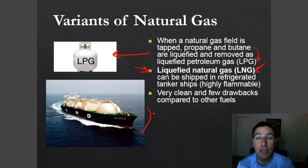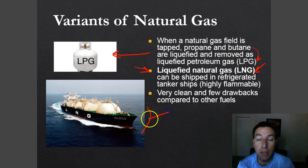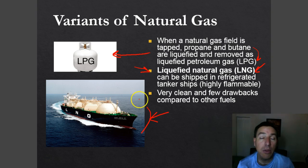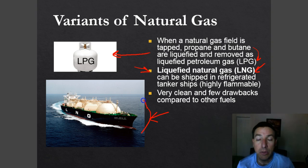When that LNG tanker is in Tampa Bay, no other large ships are allowed to go up and down the channel. It's such a dangerous cargo that they don't want any other ships in and around it as it comes into Tampa Bay — it's very dangerous to ship this stuff.